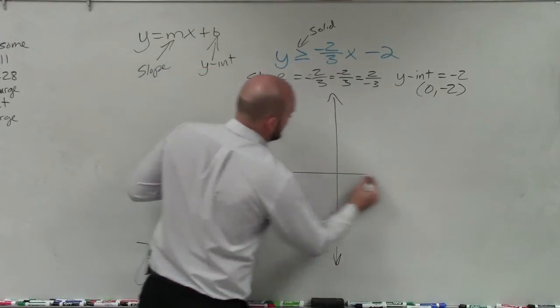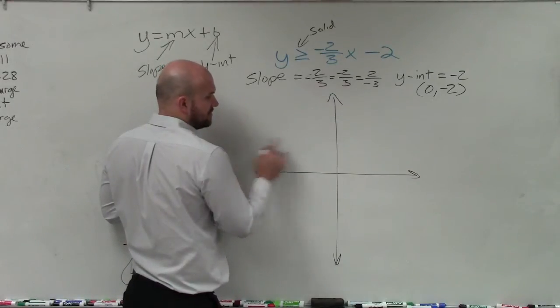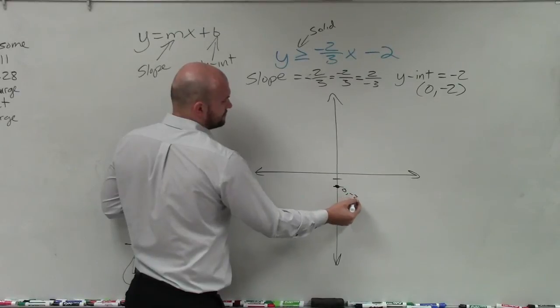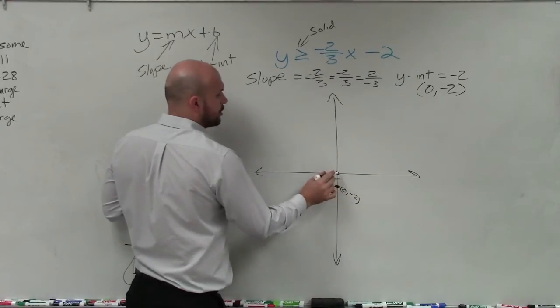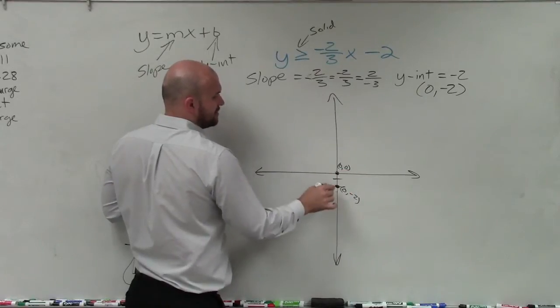Now, to go ahead and graph, we're going to start with the y-intercept. Since that is a coordinate point, we're going to plot the point 0, negative 2. So plotting the point 0, negative 2 is right here, where this is our origin 0, 0. And I'm just going down two units.